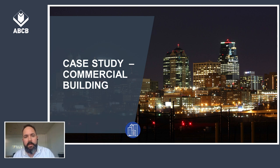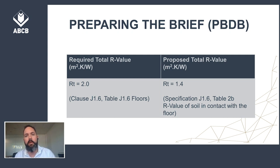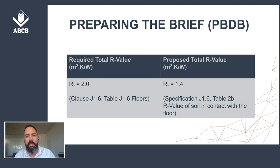Let's now apply this to a case study. We'll be using a simple petrol station in South Australia, NCC Climate Zone 5. The consultant group undertook a Section J review of the design of the proposed petrol station. An initial deemed-to-satisfy assessment deemed the floor as non-compliant with J1.6 floors. The required total R-value of the floor to comply is 2.